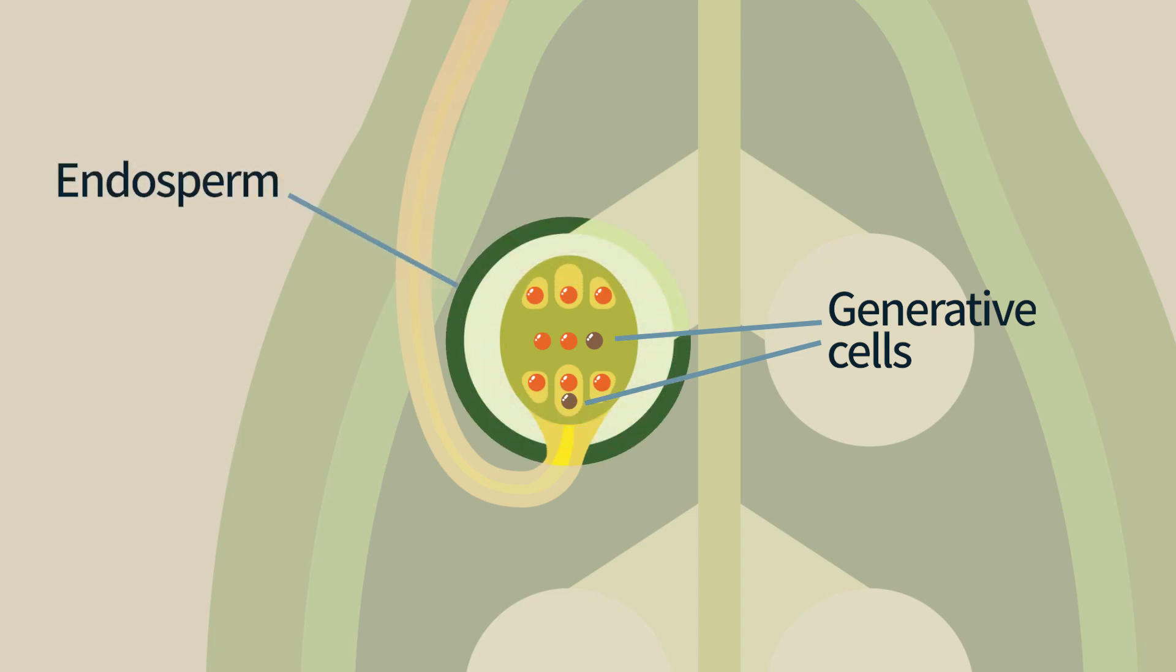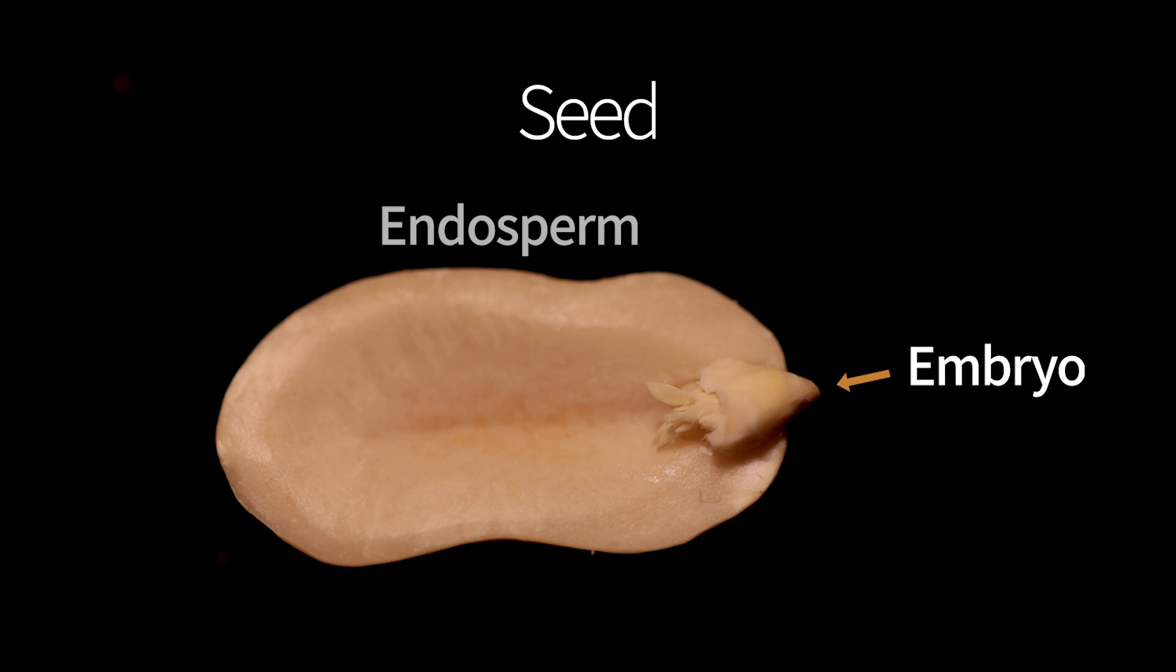This double fertilization of the egg cell and the endosperm cell will trigger the development of the seed. The seed germinates and the new plant grows.